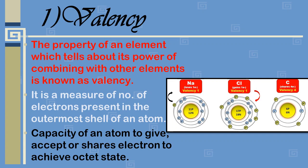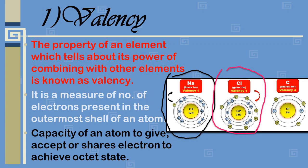For example, sodium has only one electron in its last shell, so it will easily lose that electron to complete its octet state — the valence of sodium is one. Chlorine has seven electrons and needs one more to complete its octet, so it gains one electron — valence is one. Carbon has four electrons in its last shell and shares four electrons with other atoms to complete its octet — valence of carbon is four.